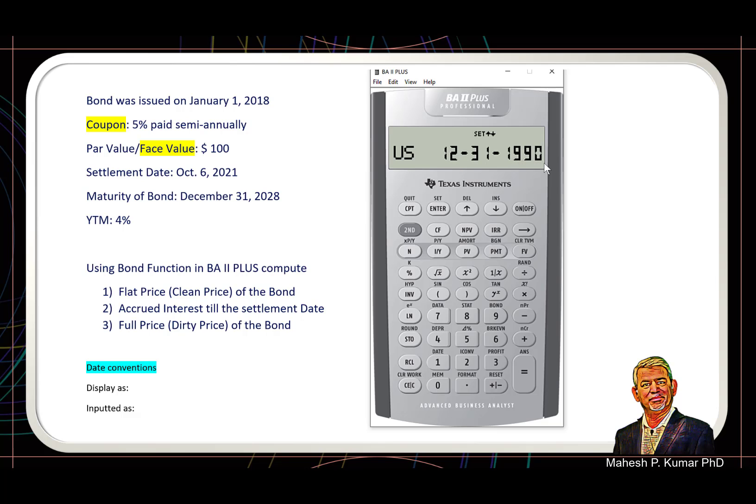We have a month MM, date DD, and YYYY. So when we use US date convention in the calculator, the display happens like this—it is MM DD YYYY date convention. But if you click second and set, you see European date convention where we write DD date first, and then MM month, and then year. This is the difference between European date convention and US date convention.